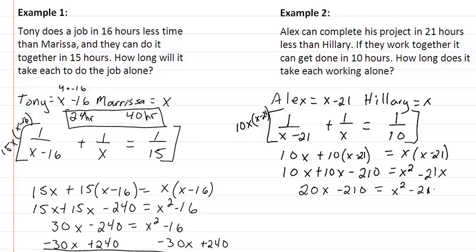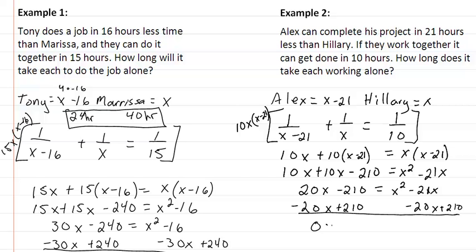Getting everything on one side by subtracting 20x and adding 210, we get 0 equal to x squared minus 41x plus 210.